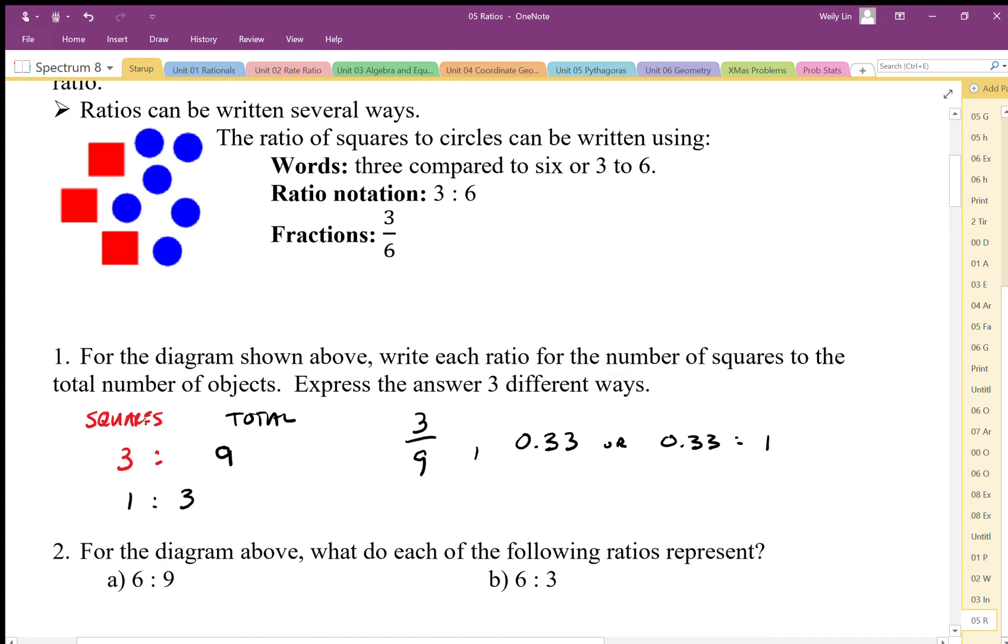This could also be written as a percentage. We can say that the red to the total is about 33%. There's a few different ways we can express this and these are all connected.